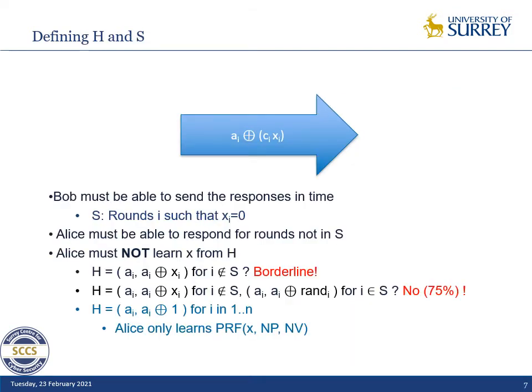The design of the help vector H is particularly important. The rounds in S — where Bob will reply on his own — are the rounds such that Xi is equal to zero. If you look at the response function, for these rounds the response is Ai regardless of the value of the challenge, because Xi equals zero cancels the challenge. In that case, Bob can send his response in advance and knows he will be correct even without knowing the challenge yet.